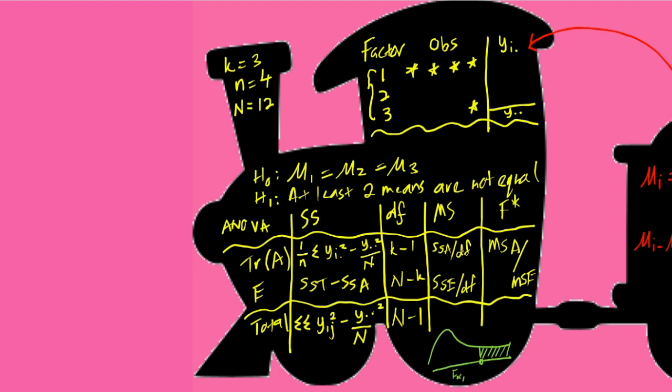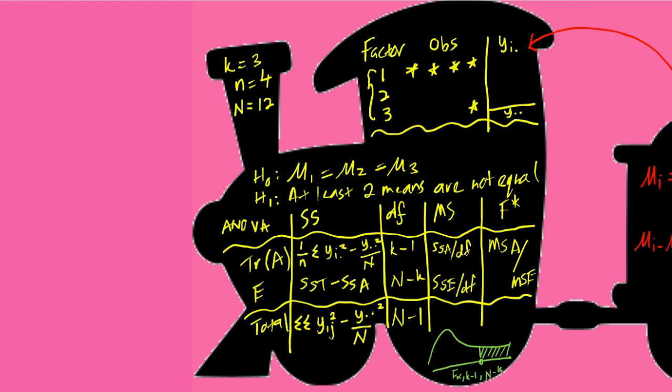the degrees of freedom for treatment which is K minus 1, comma the degrees of freedom of error which is N minus K.